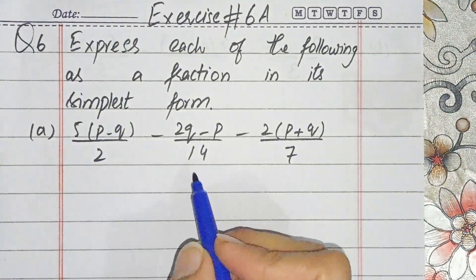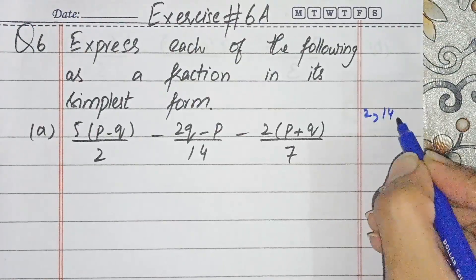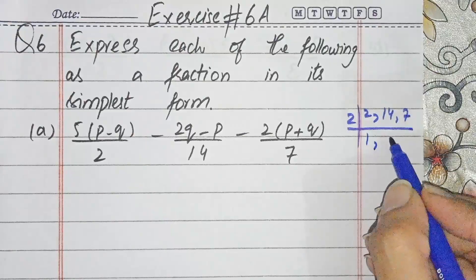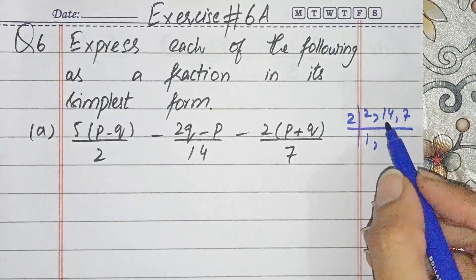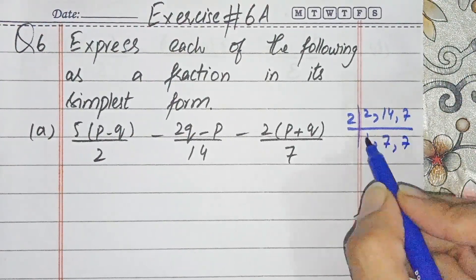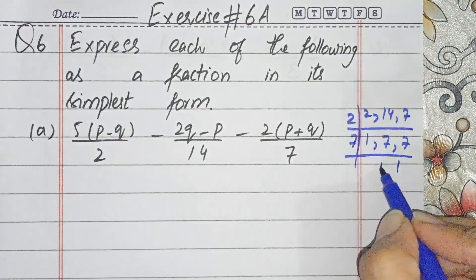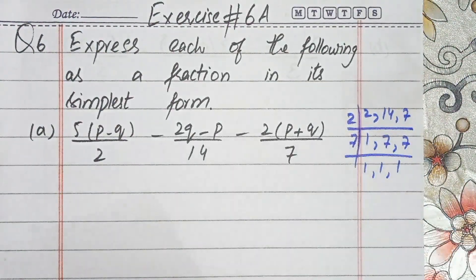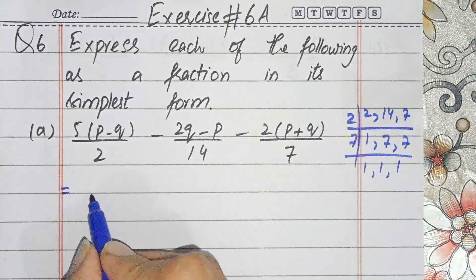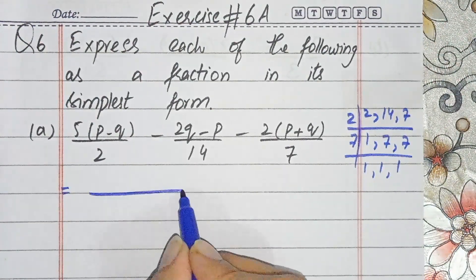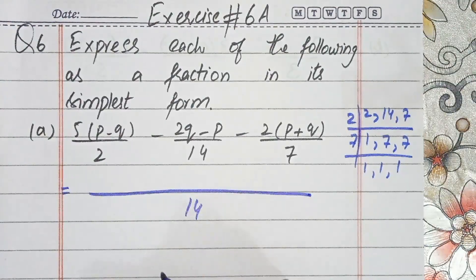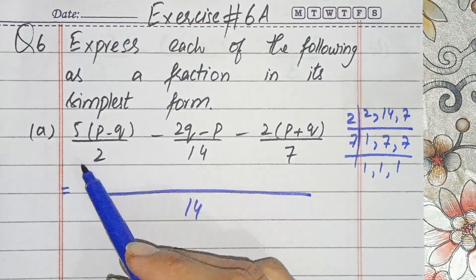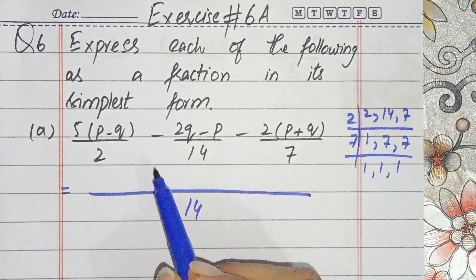Now students, we take the LCM of 2, 14, and 7. 2 goes into 14 seven times, and 7 goes into 14 twice. The LCM is 14. Now we will solve it — we will make fractions and convert them.